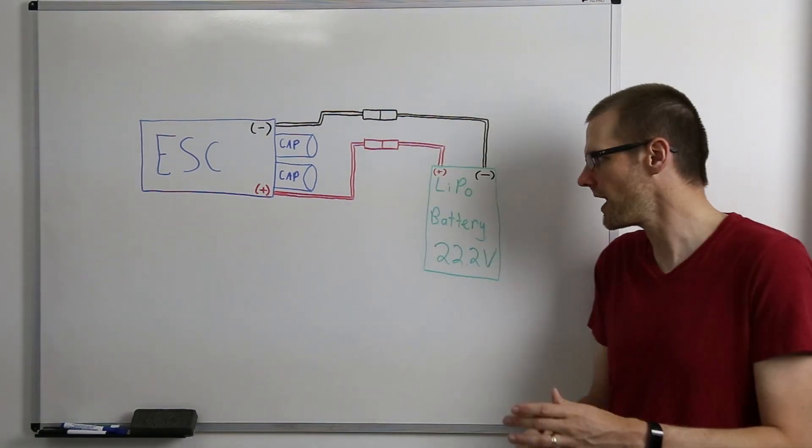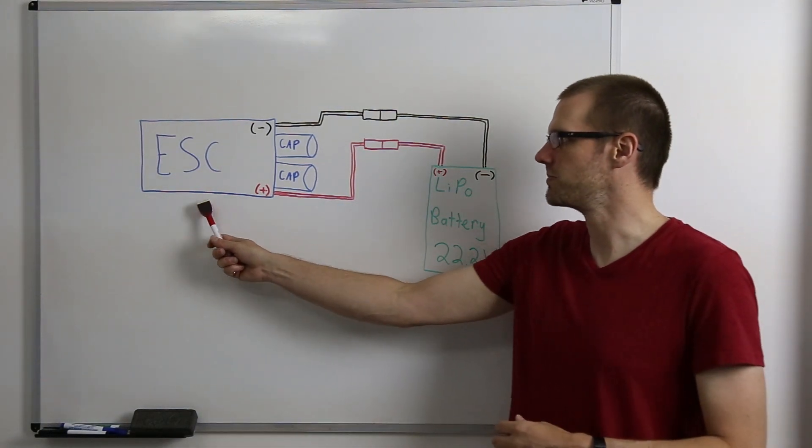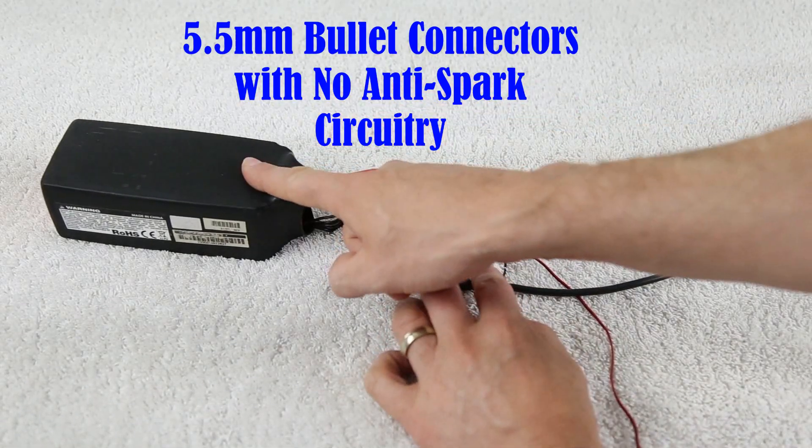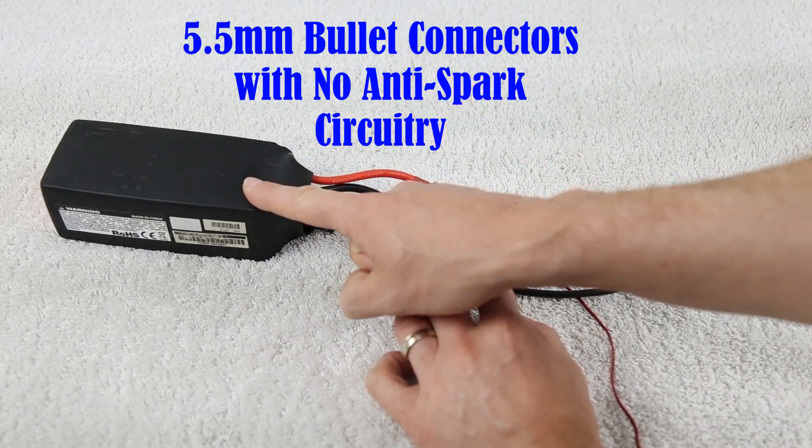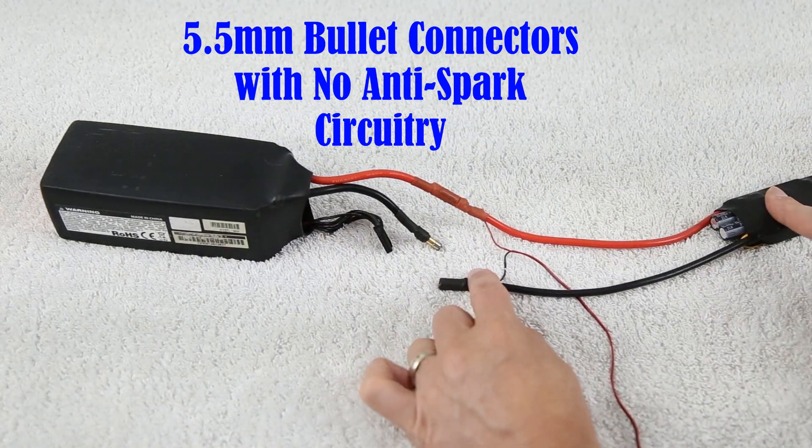Let's head over to the table where we have a 22.2 volt battery and an electronic speed control to plug into. Our positive lead is currently plugged into our battery pack. This is a 22.2 volt pack and our electronic speed control is what we are going to be powering.